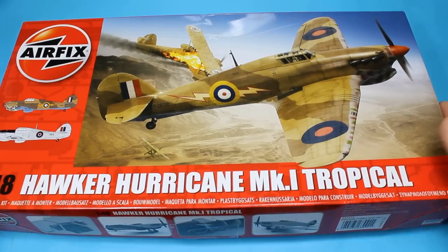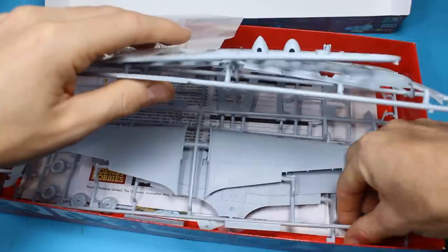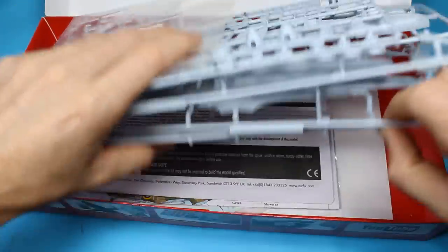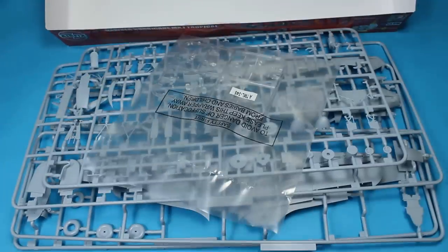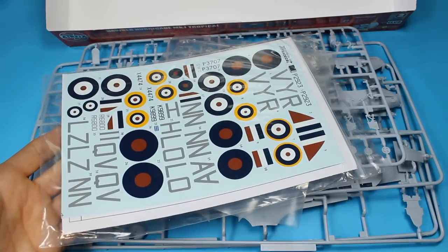Welcome back to the channel. This time we're building a Hawker Hurricane Mark 1, and this is going to be a Battle of Britain aircraft. We're using the TROP kit because I picked this version up cheap, but everything's on the sprues to do the TROP, the normal version, and the Sea Hurricane.